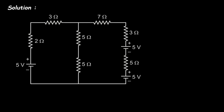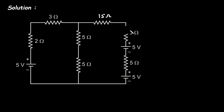For the solution, first we take this circuit. We can see that the 7 ohm, 3 ohm, and 5 ohm resistors are connected in series, so we combine them: 7 plus 3 is 10, and 10 plus 5 is 15. So we replace them with a single 15 ohm resistor.